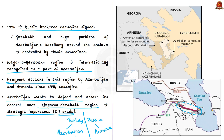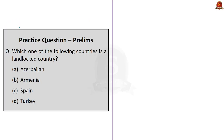As per today's news article, Russia is mediating between these countries, as it did in 1994, to avoid any major conflicts in the future. In this discussion, we covered the geography and strategic importance of Armenia and Azerbaijan and the background behind the conflict between these countries.